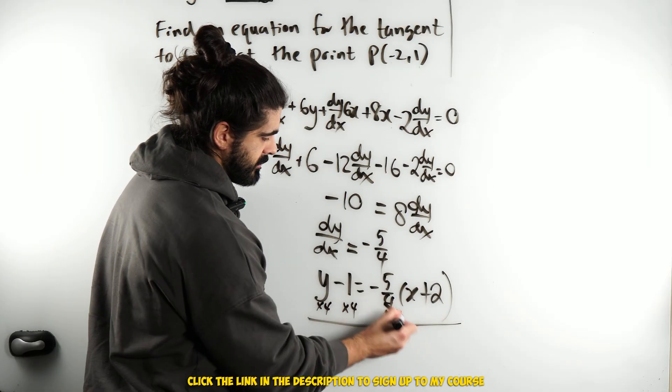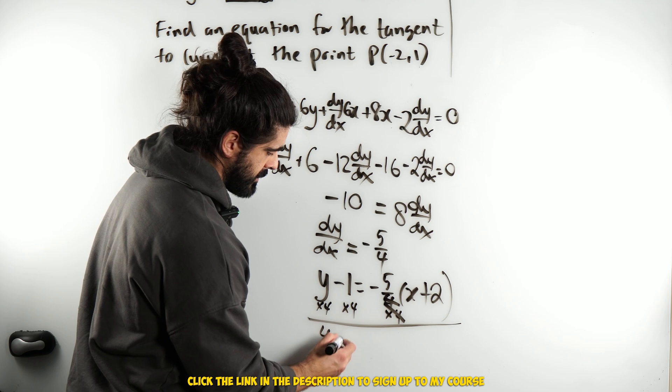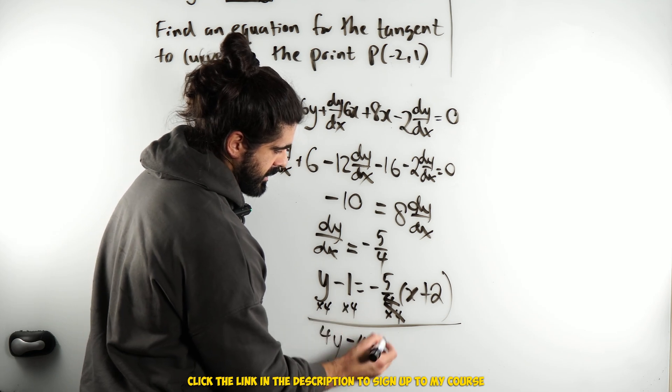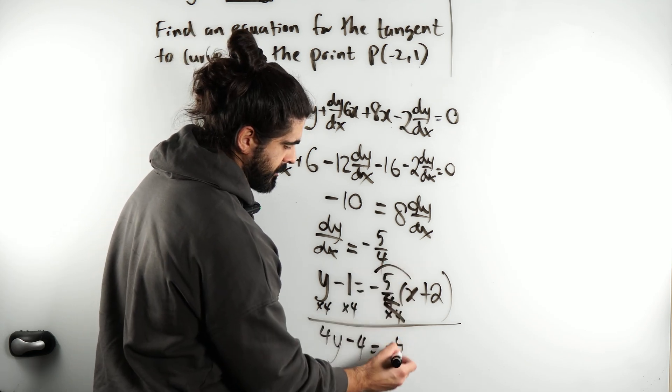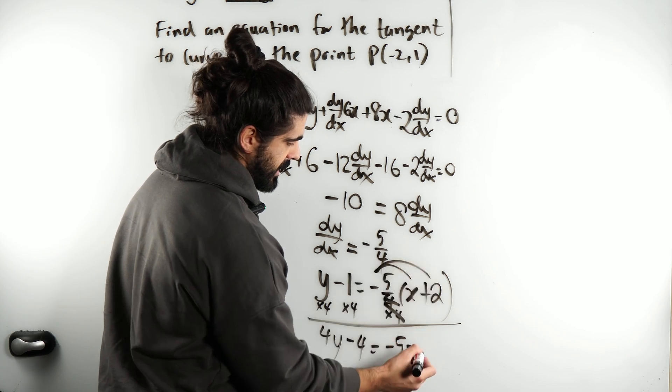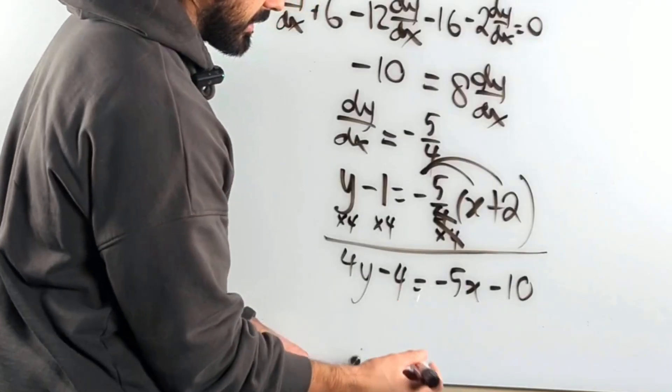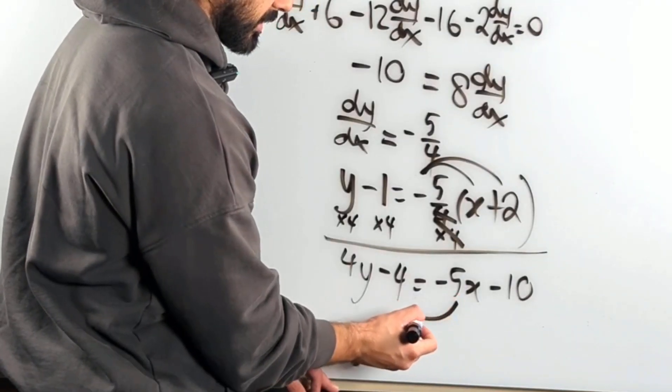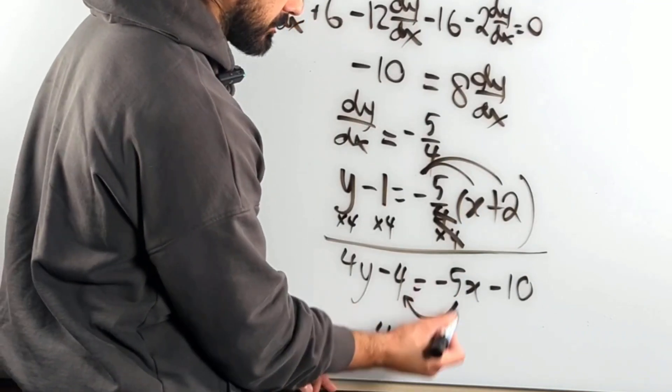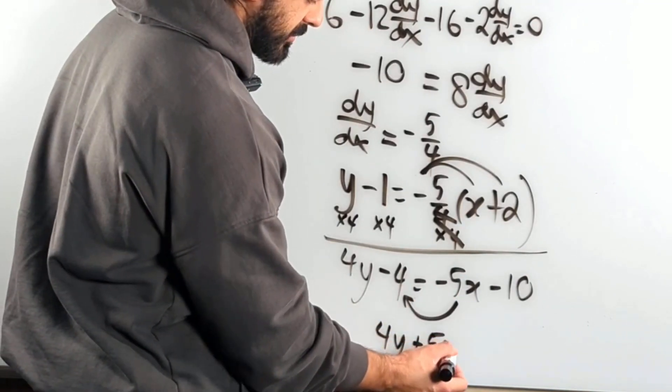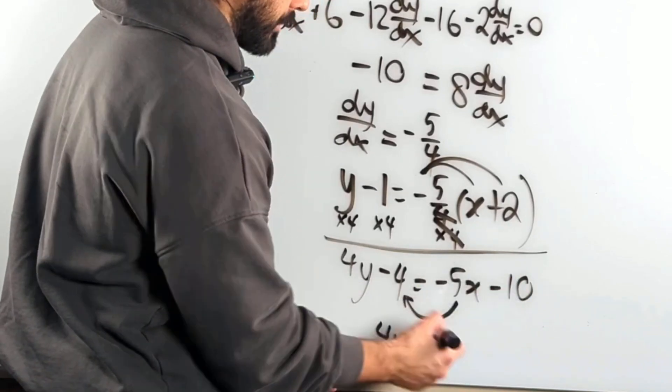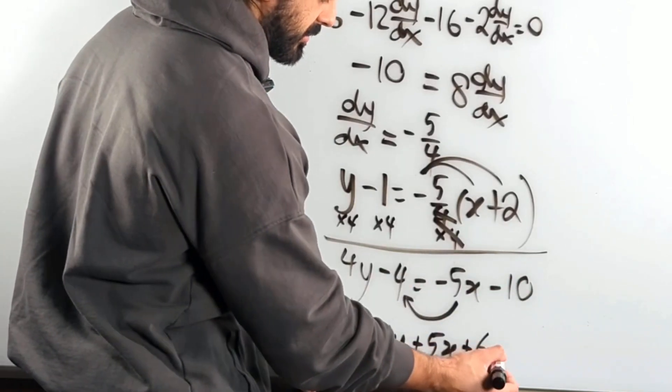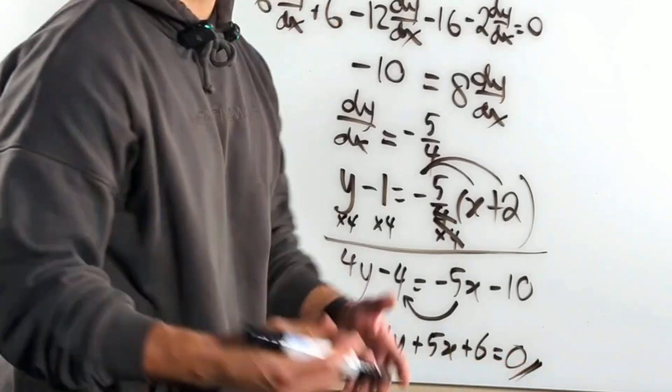So get rid of all denominators, boom, 4y minus 4. Here you have minus 5x, and then here you have minus 10. Then just move everything to one side. So you have 4y minus 5x on the other side is plus 5x, minus 4, plus 10, 10 minus 4 is 6, is 0. Nice.